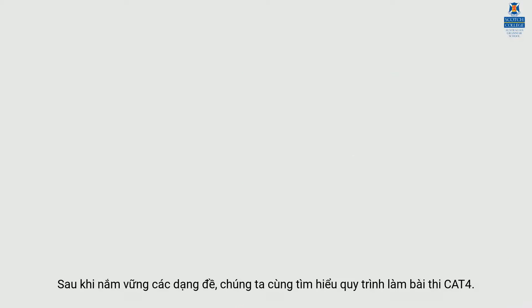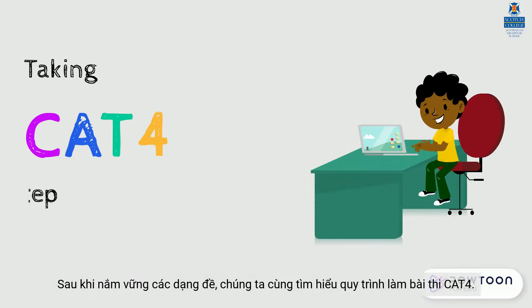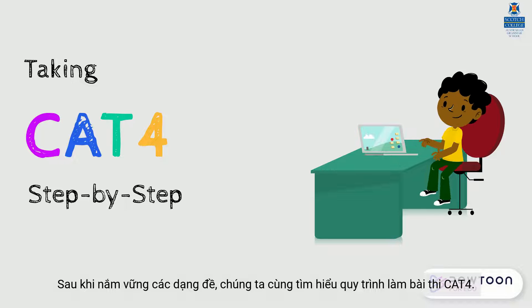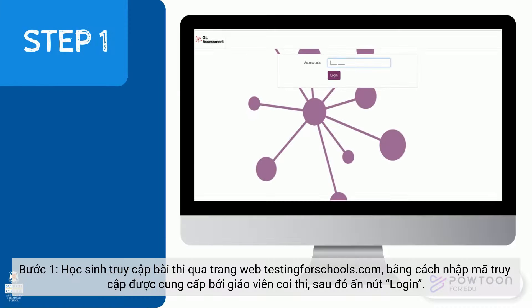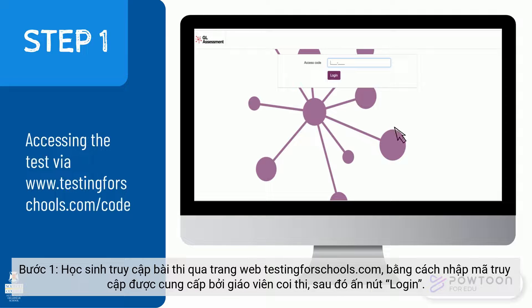Now that you are ready for the test, let's have a look at how to take CAT4 step by step. Step 1: you will access the test via testingforschools.com. You need to type in your access code given at the beginning, then click Login.